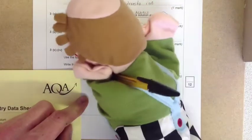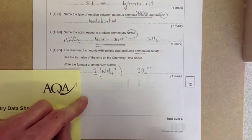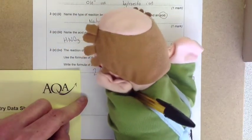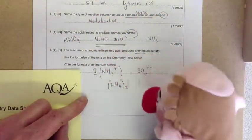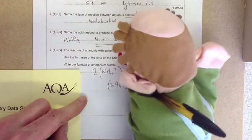The answer would be (NH4)2 in brackets because you multiply all of it by 2, then SO4.